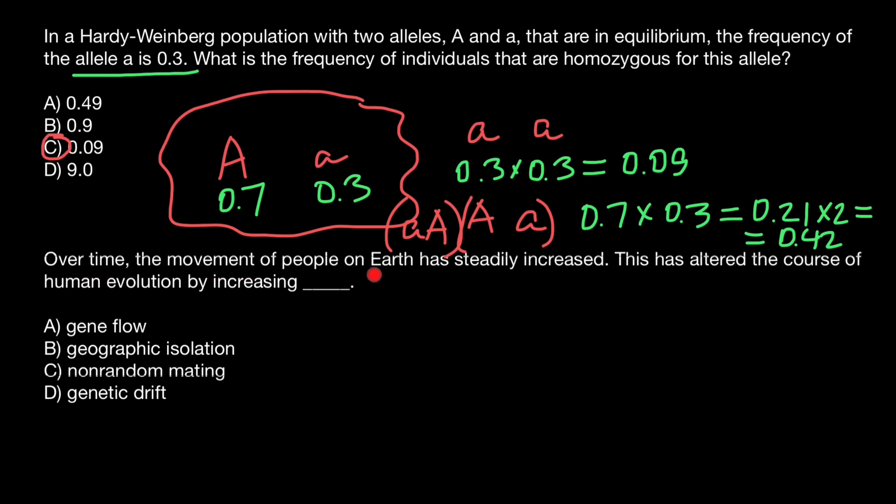Over time, the movement of people on Earth has steadily increased. This has altered the course of human evolution by increasing. And you have to choose one of these answers.